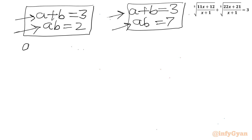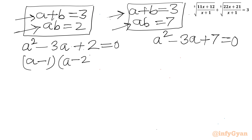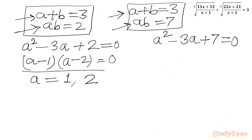For the first system, let's write the quadratic in a: a² minus 3a plus 2 equals 0. We can factor this as (a minus 1)(a minus 2) equals 0, giving a equals 1 or a equals 2.